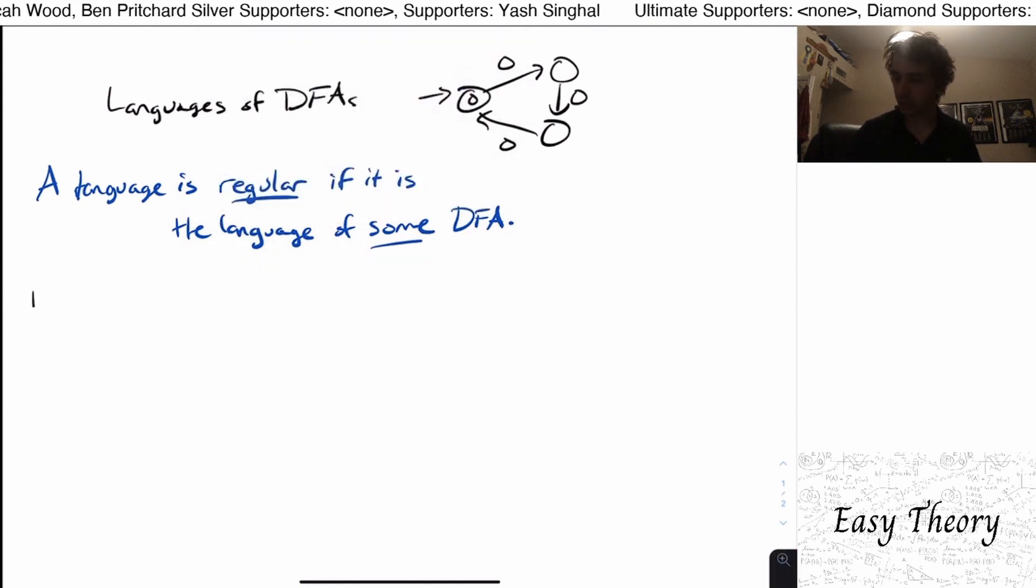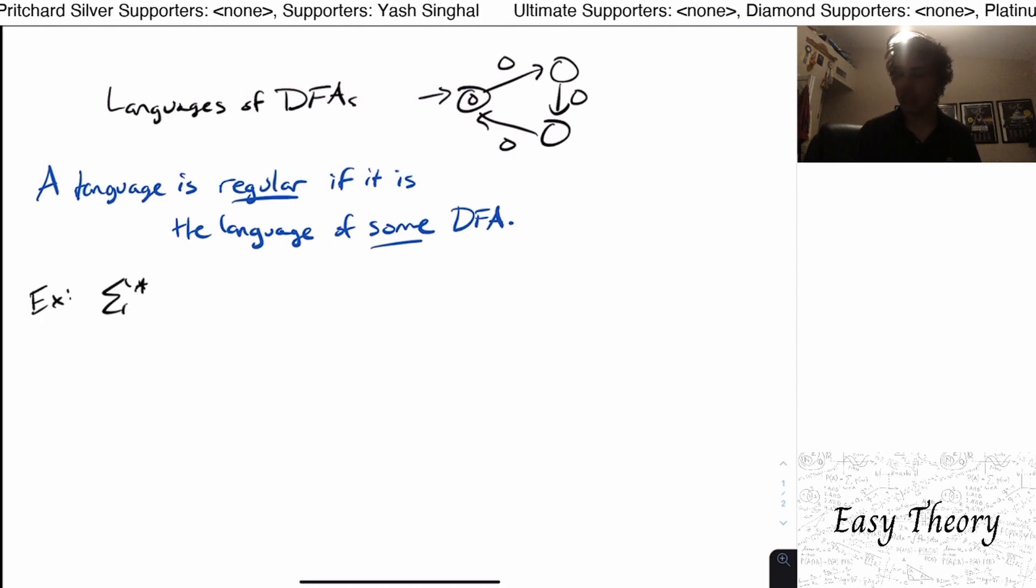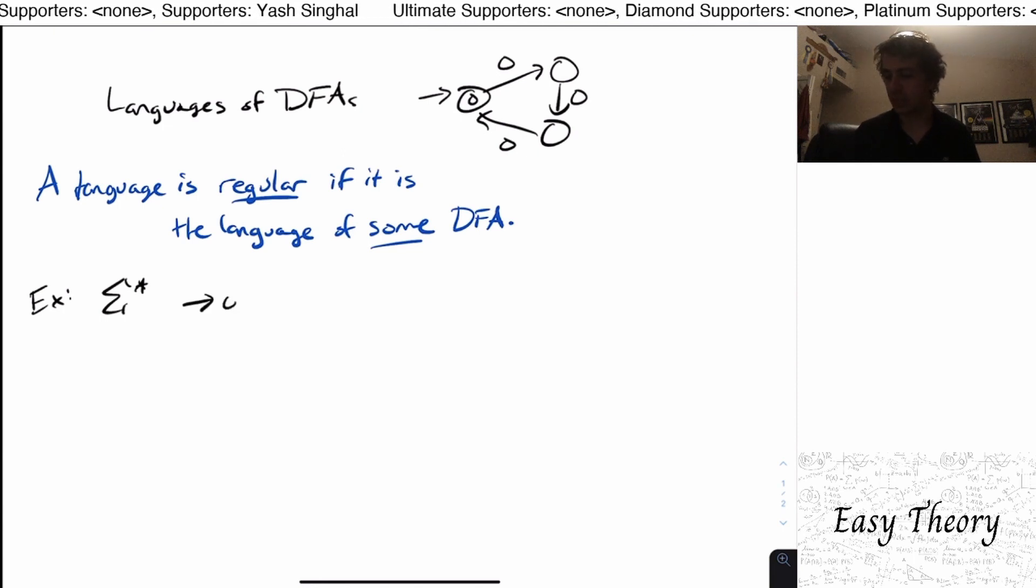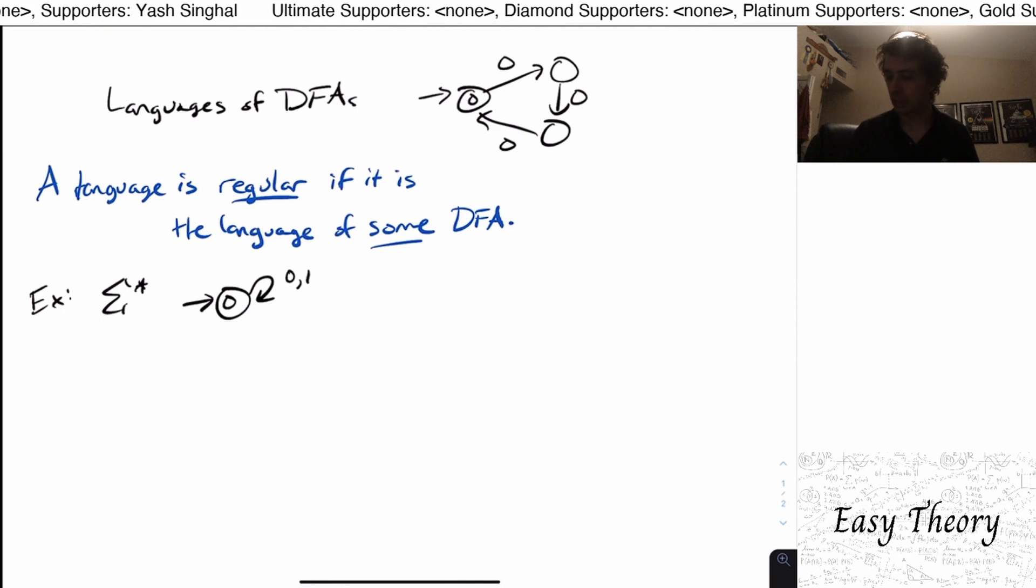So let's just do some examples here. So sigma star. Is that regular? And it turns out it is obviously, because we can make a DFA like this. So let's say 0, 1, if sigma is the set 0, 1, just as an example.